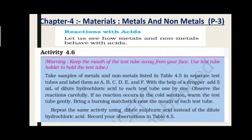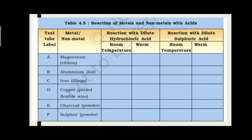ऊपर burning match stick रखनी है और check करना है। यह activity आपको dilute Hydrochloric Acid और dilute Sulfuric Acid दोनों के साथ repeat करनी है और जो भी reactions मिलते हैं लिखने हैं। जब metal की HCl के साथ reaction होती है तो metal के chlorides मिलते हैं और Hydrogen gas free होती है। Metal की Sulfuric Acid के साथ reaction में metal के sulfates मिलते हैं।